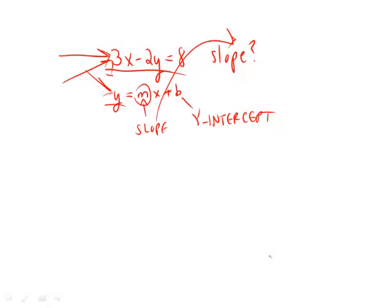Notice how there's a 3x next to the y. Let's subtract that to both sides. We get negative 2y is equal to negative 3x plus 8.